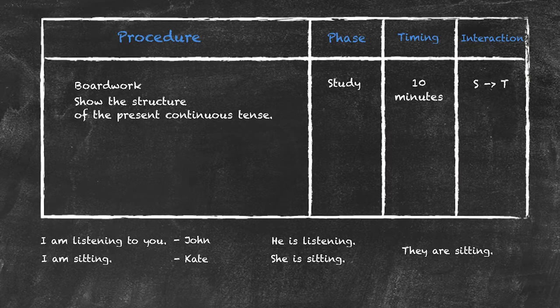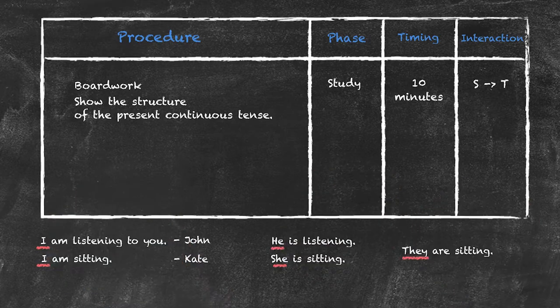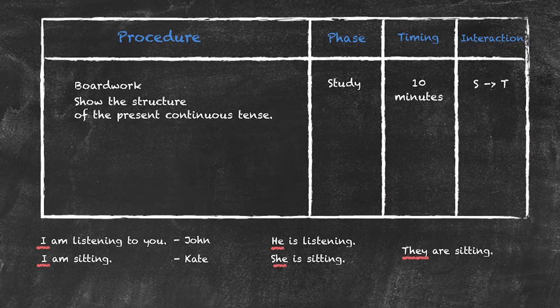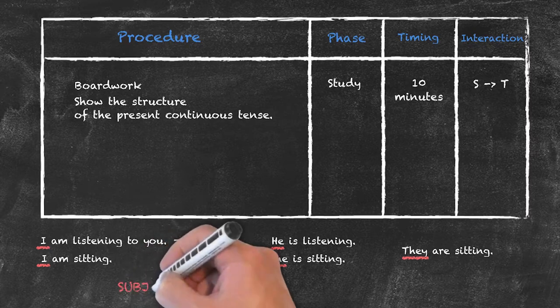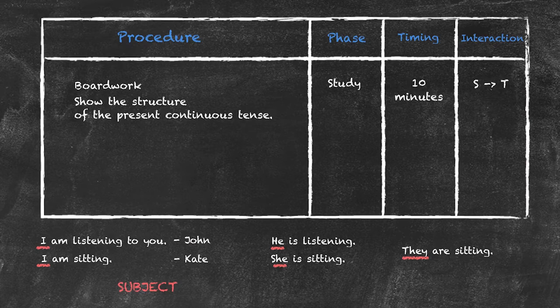If we look at each of the first words in here, then at this level I should hopefully be able to elicit from my students what each of these words have in common. And they may well give an answer that each of those words is actually a subject. What I could then do is to elicit those subjects that are not already here, for example, we and it.